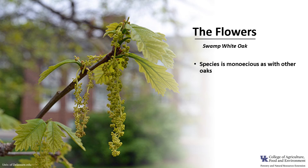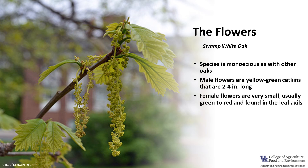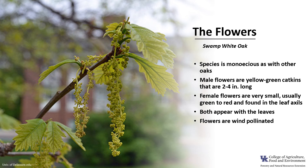This species is monoecious, meaning a tree has both male and female flowers, as with other oaks. The male flowers are yellow-green catkins that are two to four inches long, and the female flowers are very small, usually green to red, and found in the leaf axils. They both appear with the leaves, and the flowers are wind pollinated.